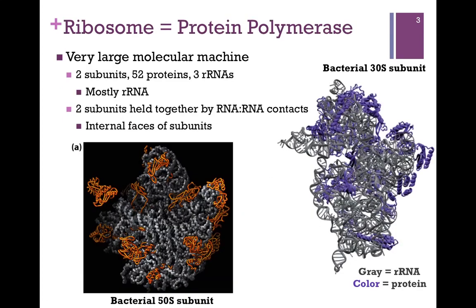Here we are looking at two illustrations of the bacterial ribosome. On the right we have the small 30S subunit, and on the left we have the larger 50S subunit. Together the two subunits contain 52 proteins and three rRNA molecules. The gray represents the ribosomal rRNA and the colored portion represents protein. By comparing these two, you can see that the ribosome is mostly rRNA.